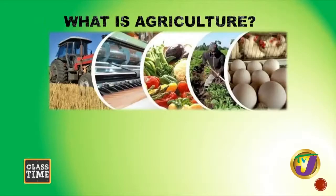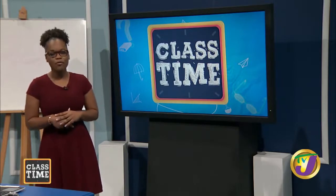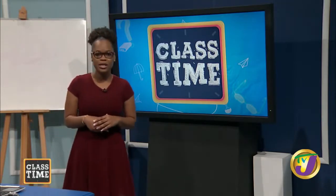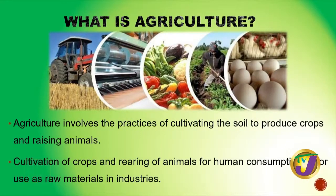We will start by looking at agriculture — what it is. Often the term agriculture is interchangeably used with farming; more or less they are the same in this context. By definition, agriculture is the cultivation of crops and the rearing of animals — or more fully, the cultivation of crops and rearing of animals for human consumption or for use as raw materials in industries or factories.